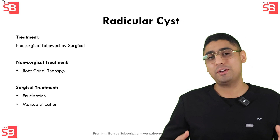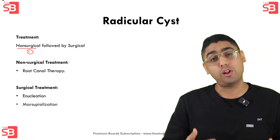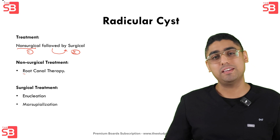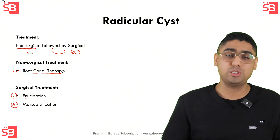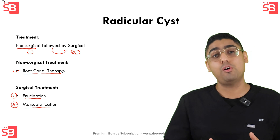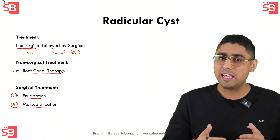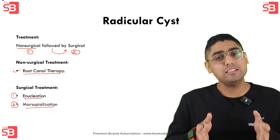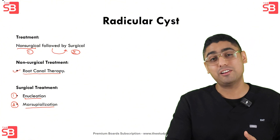Let's talk about the treatment approach for the radicular cyst. We generally start with non-surgical methodologies and proceed to surgical options later. For non-surgical treatment, the primary method is root canal therapy. Following that, surgical interventions may include enucleation or marsupialization. Enucleation involves surgically removing the entire cyst along with its lining. Marsupialization involves creating an opening that allows the cyst to drain slowly so it shrinks over time, and is often preferred for larger cysts near vital structures as it is less invasive.